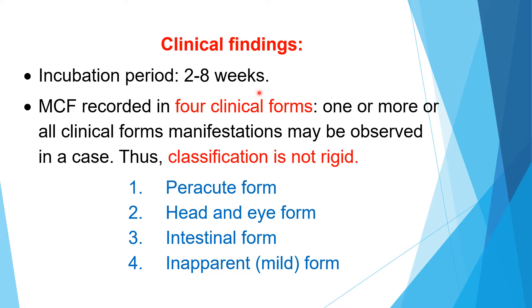We have seen other viral diseases where the incubation periods are in days, say 2 to 5 days or 2 to 6 days. When the incubation period is short, the disease spreads very fast. Here the incubation period is very long, 2 to 8 weeks, so the disease will not spread very fast. As we have seen in the introductory part, the disease is sporadic — scattered cases occurring in various pockets of infection, where one case may not have relation to the other. So this disease is not in the form of epidemics or outbreaks; it is a sporadic disease.